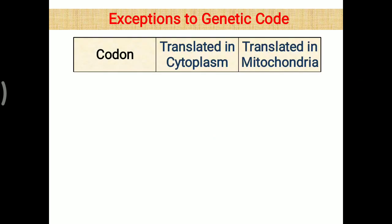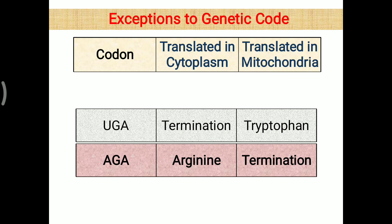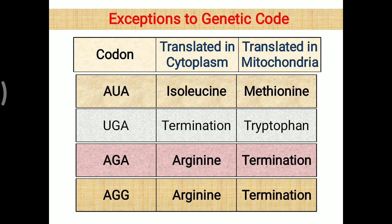Some exceptions to the genetic code in mitochondria: UGA is a terminator codon in the cytoplasm but codes for tryptophan inside mitochondria. AGA translates as arginine in the cytoplasm but works as a terminator in mitochondria. Similarly, AGG codes for arginine in the cytoplasm but acts as a terminator in mitochondria. Interestingly, AUA codes for isoleucine in the cytoplasm but codes for methionine in mitochondria. That covers all the key features of the genetic codon.